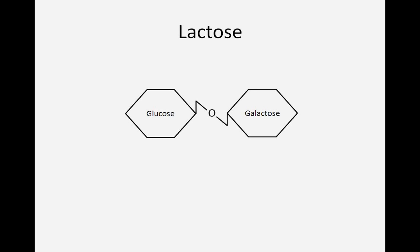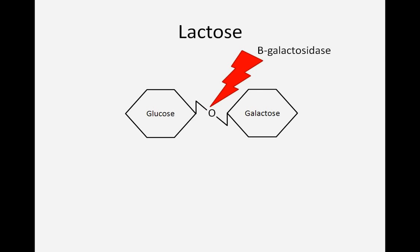Lactose is a disaccharide consisting of galactose and glucose. In order for a bacterial cell to make use of lactose as an energy source, it must cleave the disaccharide in two, a job performed by the enzyme beta-galactosidase. Production of beta-galactosidase when the cell does not need to use lactose would be a waste of energy and should be avoided.